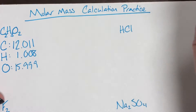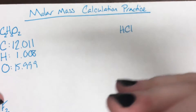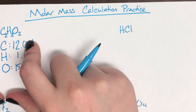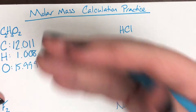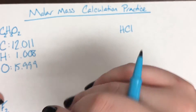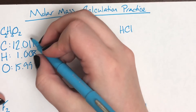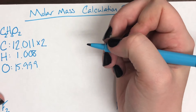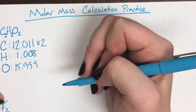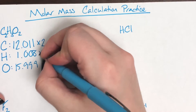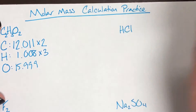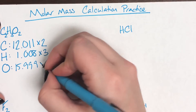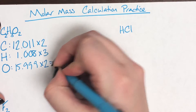Once I have all my masses, I can multiply by how many I actually have present in the compound — that comes from the subscripts. The subscripts are the count for the actual number of each element in the compound. Carbon has a subscript of 2, so I'm multiplying its mass by 2. Hydrogen has a subscript of 3, so I multiply hydrogen's mass by 3. And oxygen has a subscript of 2, so I multiply oxygen's mass by 2.